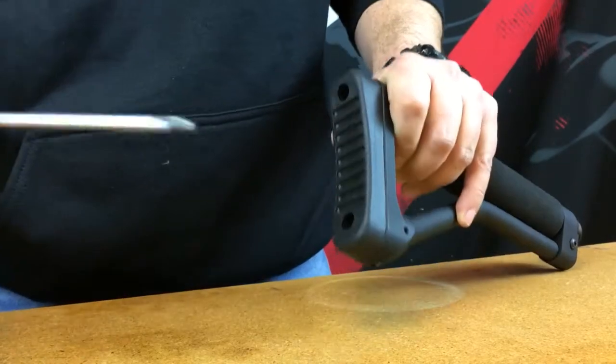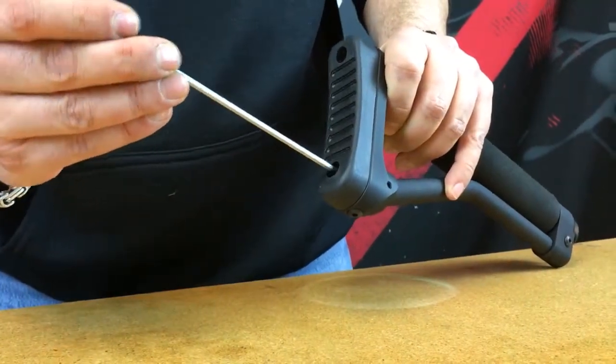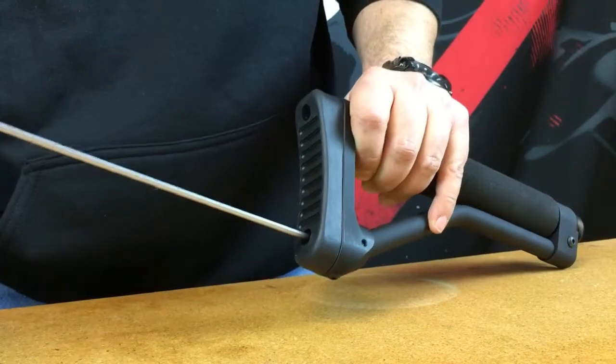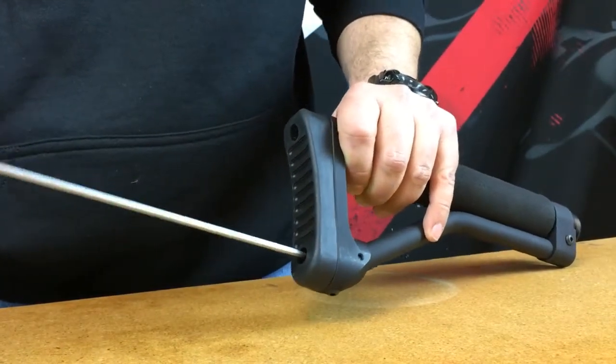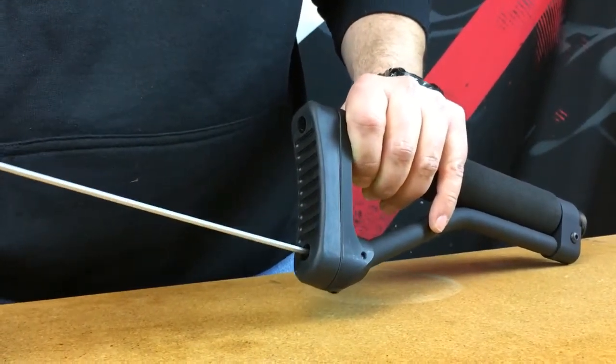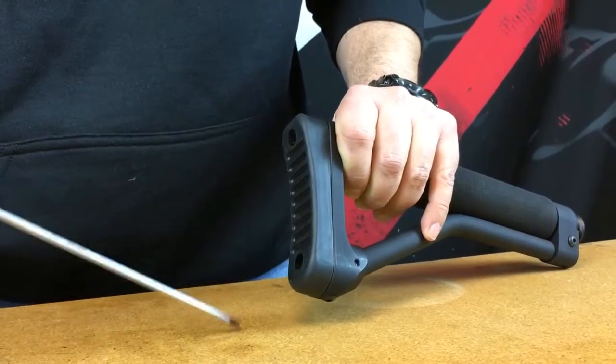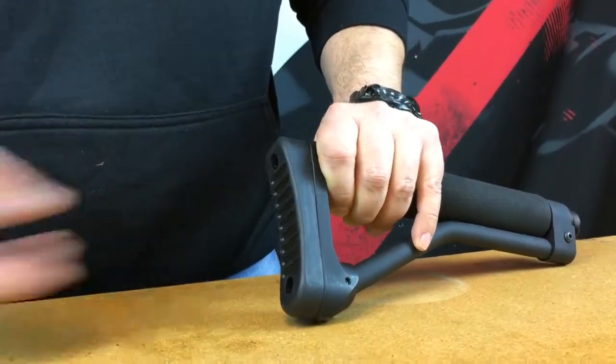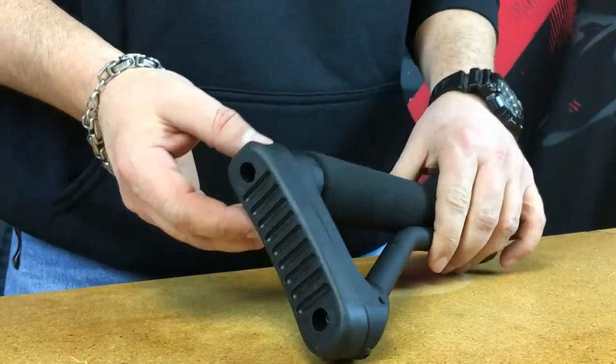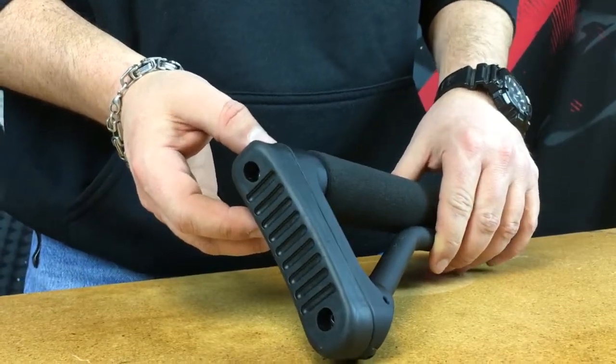Then you will come back and you're going to tighten down your lower screw. Same thing. You don't want to crush anything. You just want to snug it up just like that. That's proper installation on our rubber butt pads for our ACE skeleton stock.